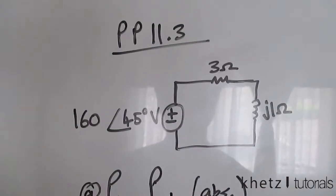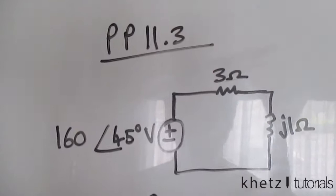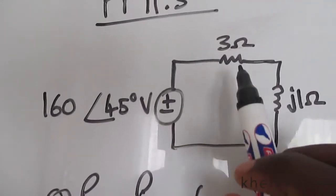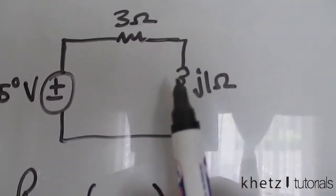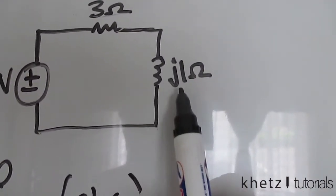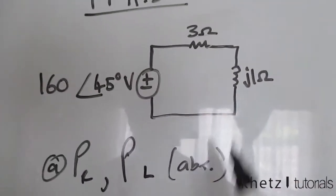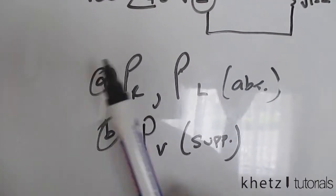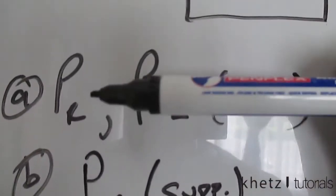Welcome to Cat's Tutorials. In this video I'll be covering practice problem 11.3. Given this circuit, it has a voltage source, a resistor of value 3 ohms, and an inductor impedance of J1 ohm. We are asked to solve the following things.